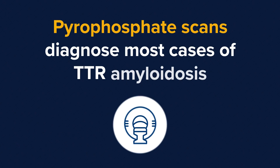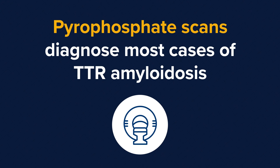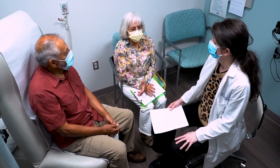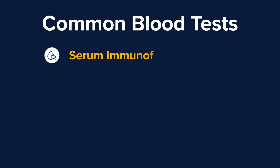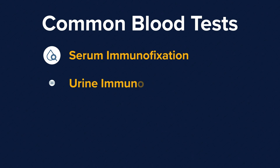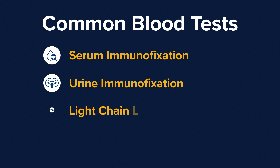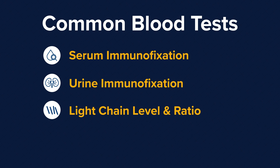TTR amyloidosis can also be diagnosed by a pyrophosphate scan. Light chain amyloidosis can be diagnosed by blood tests. The common blood testing that we do is the serum immunofixation, the urine immunofixation, as well as the light chain ratio. Confirmation of this type of amyloidosis can also be performed by obtaining a bone marrow biopsy.